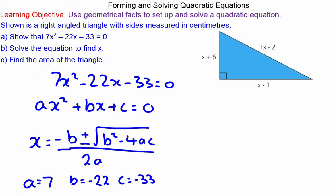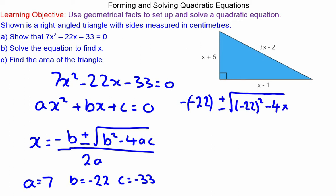We can use the formula: (-b ± √(b² - 4ac)) / 2a, which you can derive by completing the square. Putting in our values: (-(-22) ± √((-22)² - 4×7×(-33))) all over 2×7.